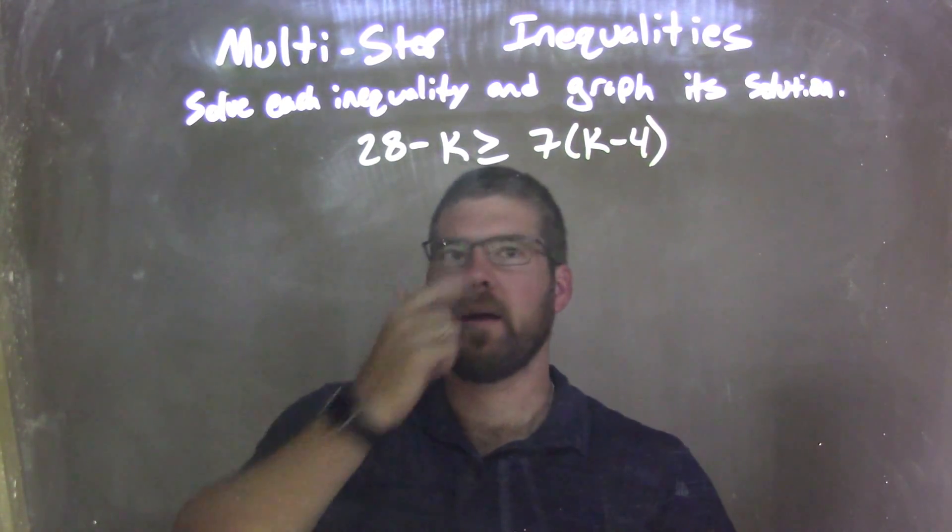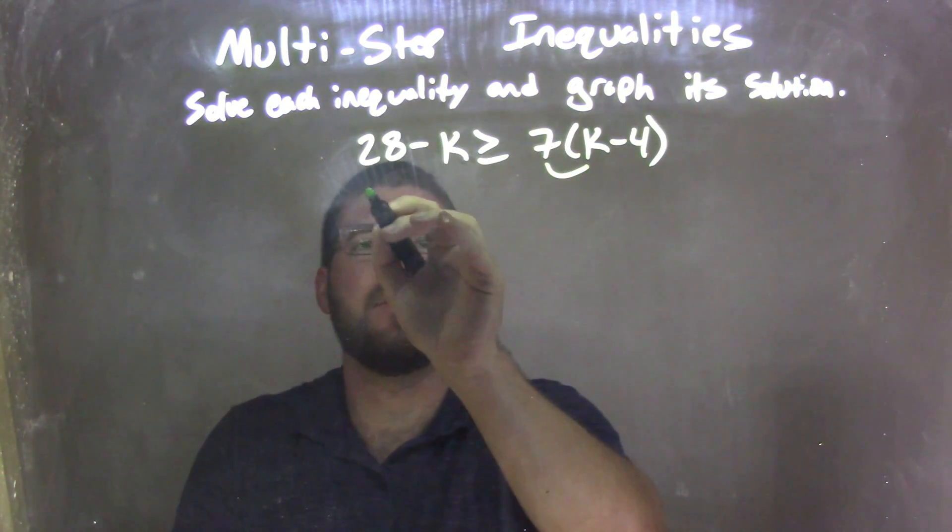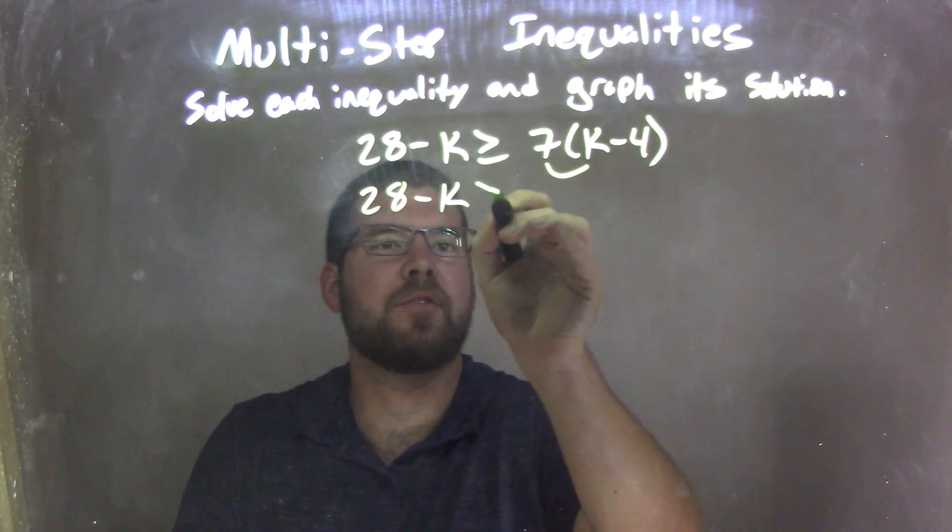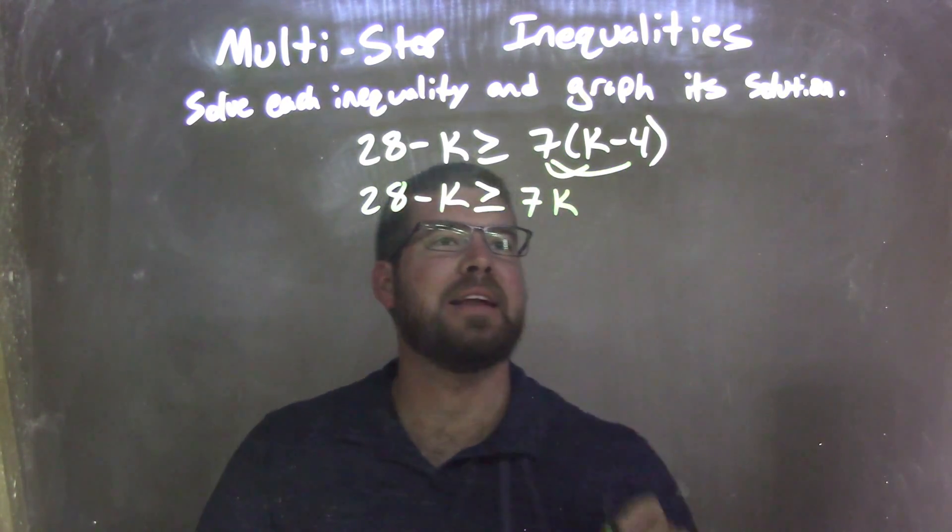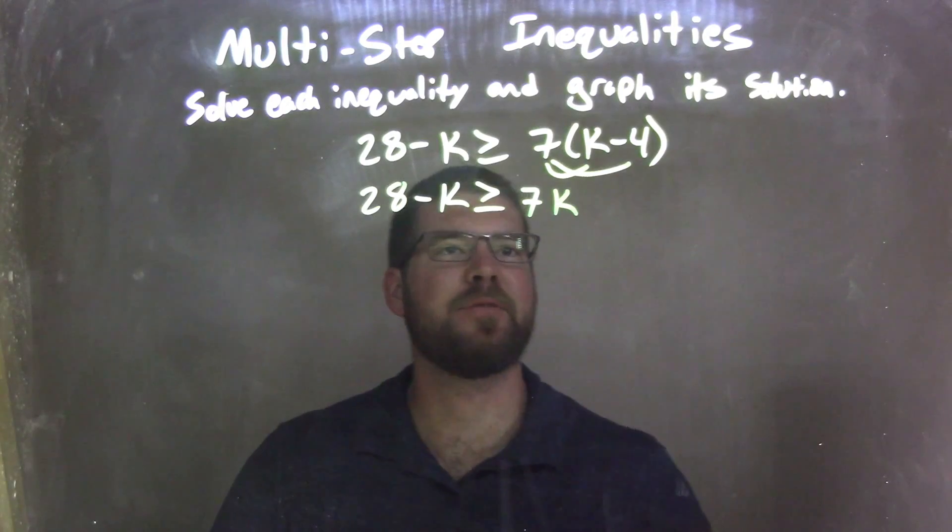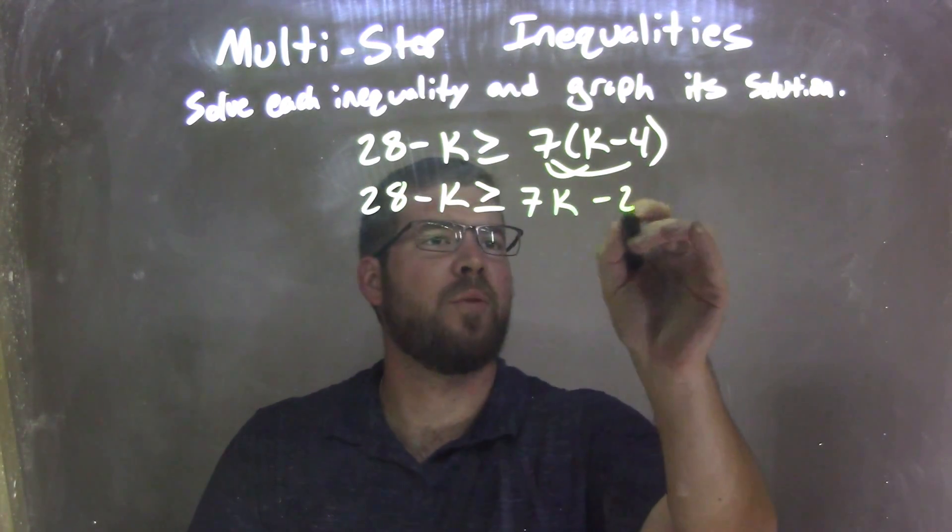First thing, I'm going to distribute the 7 across to both parts. So we have 28 minus k is greater than or equal to 7 times k is 7k, and 7 times negative 4 comes out to be negative 28.